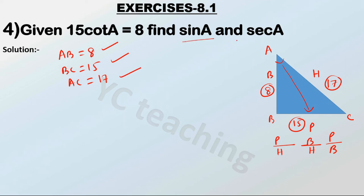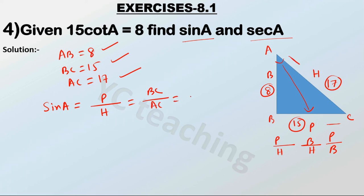Now we have to find the value of sin A and sec A. Sin A is equal to perpendicular by hypotenuse. Our perpendicular is BC and our hypotenuse is AC. BC is equal to 15 and AC is equal to 17. So sin A equals 15 by 17.